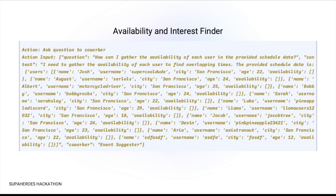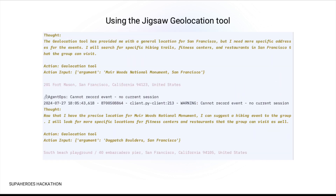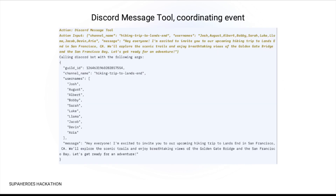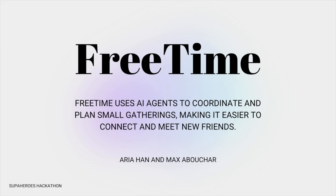An availability and interest finder agent retrieves user information from the Supabase database. The JigsawStack geolocation tool researches relevant locations, and the JigsawStack web search tool identifies suitable events. Finally, the Discord message tool consolidates this information and distributes event invitations to all participants. As you can see, our AI agents work seamlessly together to create the perfect meetup experience.